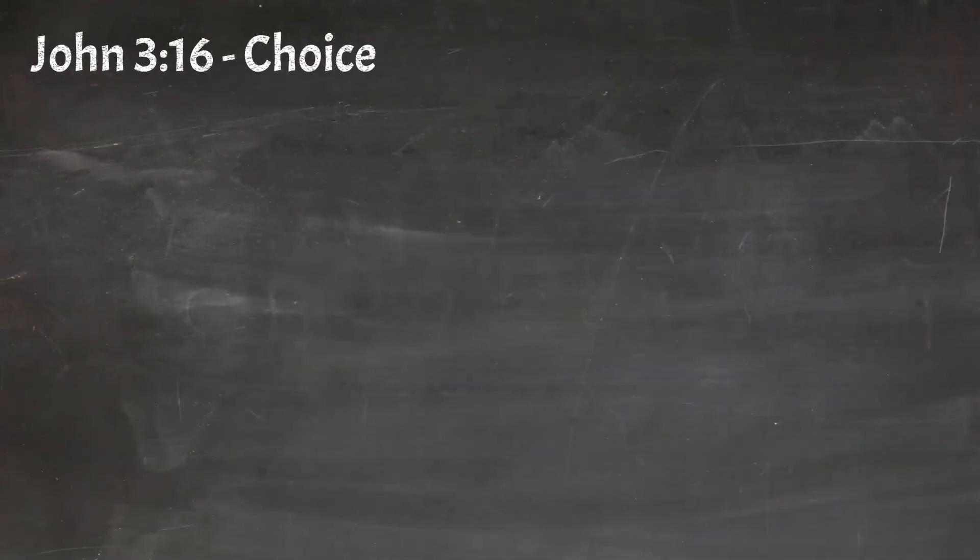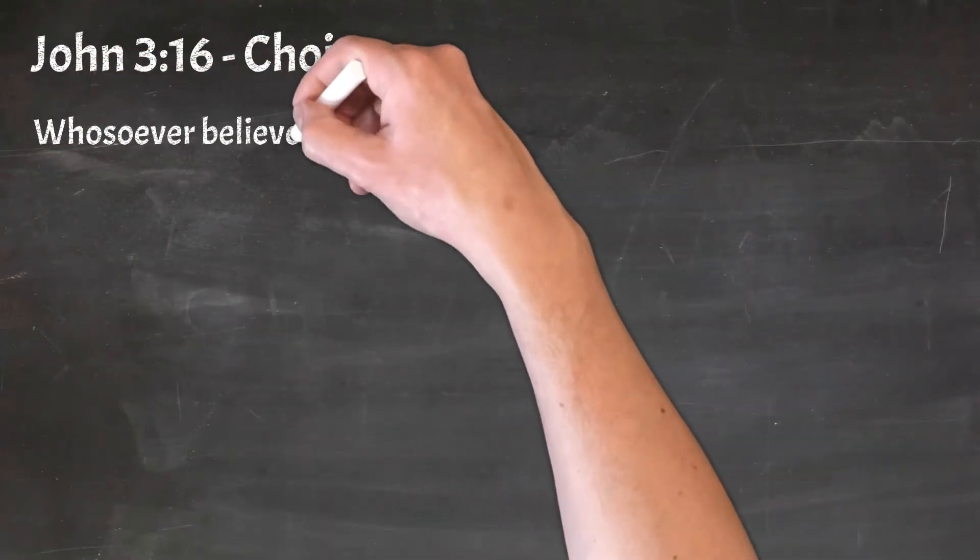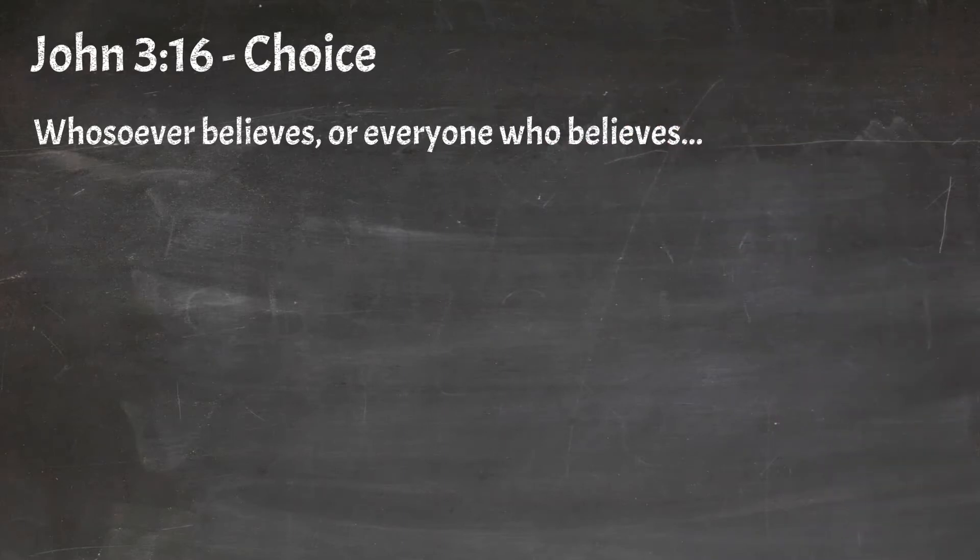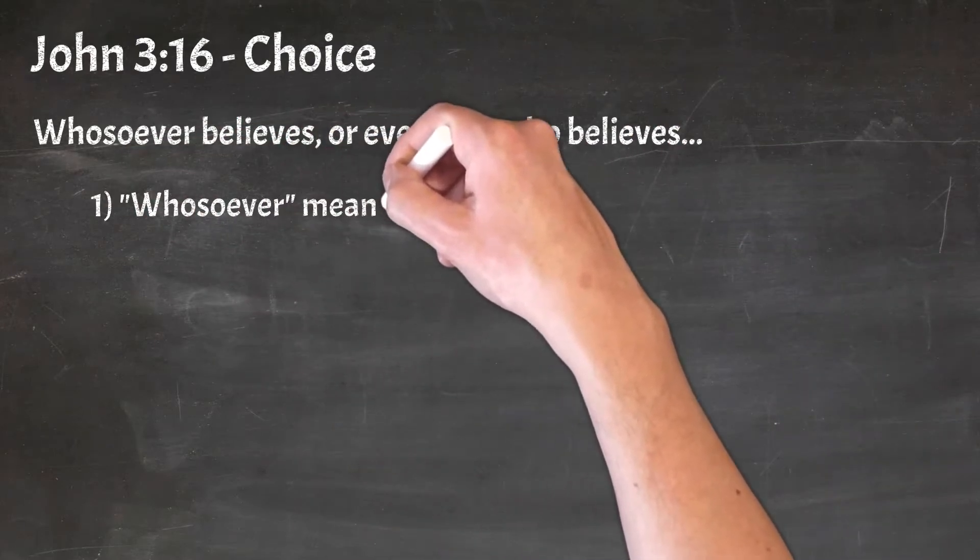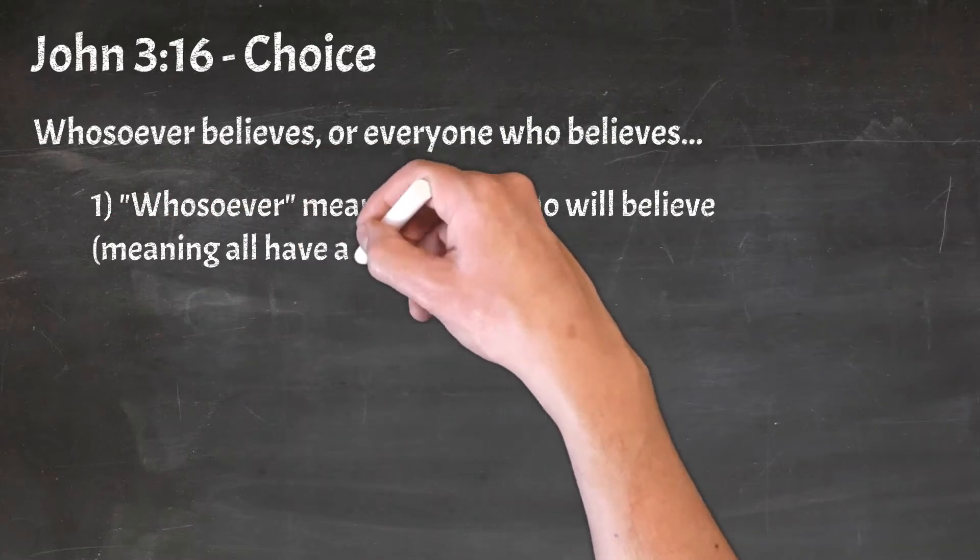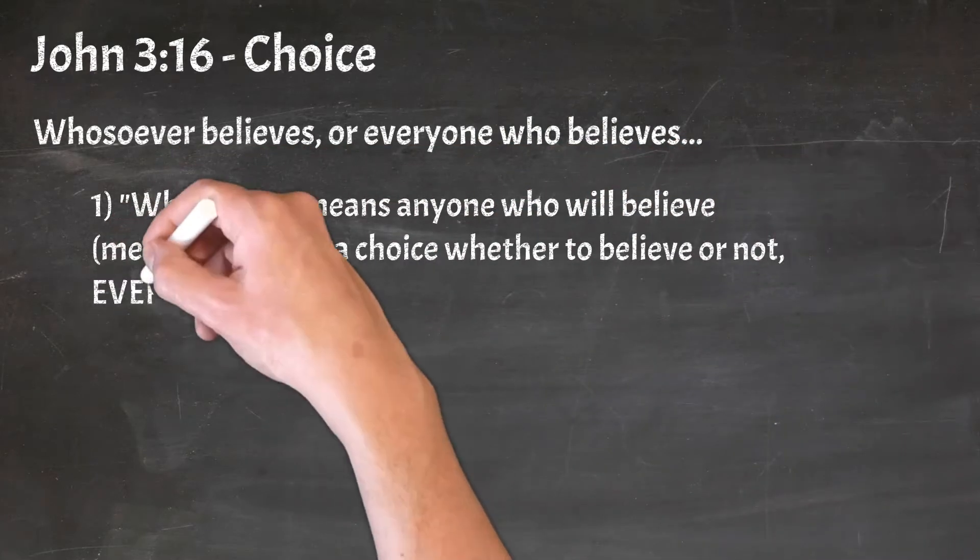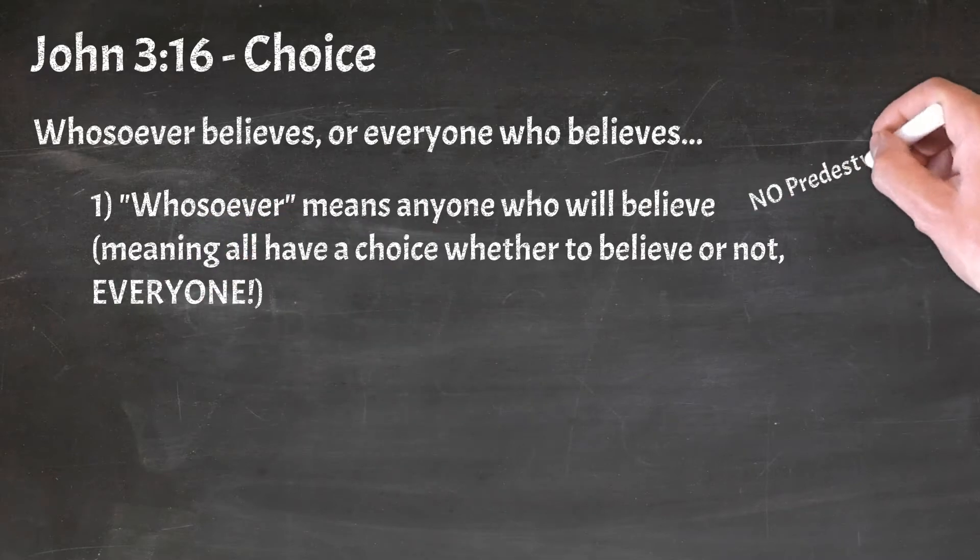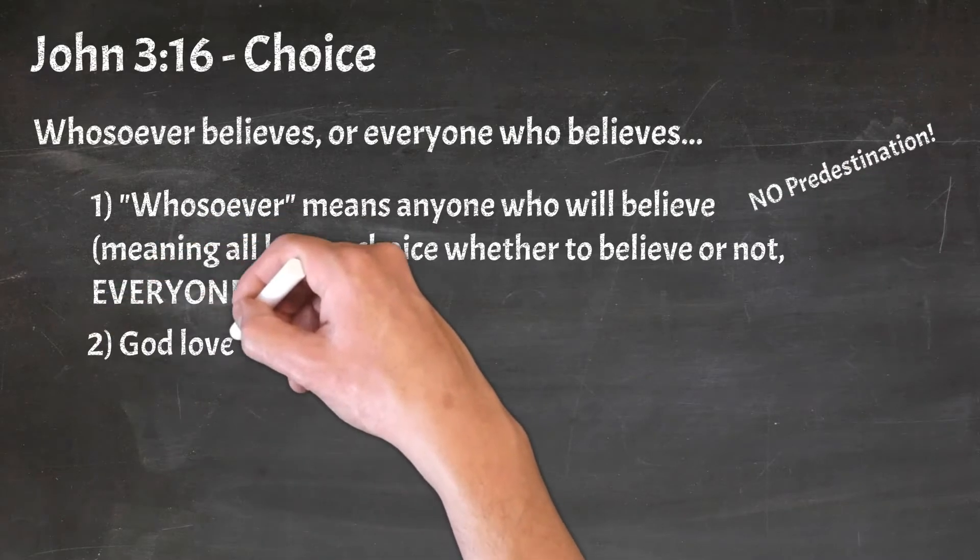John 3:16 on choice. Whoever believes, or everyone who believes, depends on which version you read. Number one, whosoever means everyone who will believe, meaning that all have a choice whether or not to believe. That means everyone, and there is no predestination.